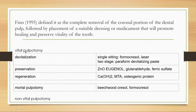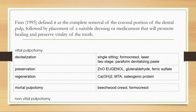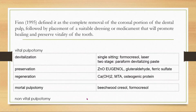We basically have two types of pulpitomy: vital and non-vital. In vital pulpitomy, we have the vitalization type, preservation type, regeneration type, and mortal pulpitomy. In vitalization, we can have single-sitting and two-stage: single-sitting can use formocresol or laser; two-stage can use paraformaldehyde-containing paste. Preservation uses zinc oxide eugenol, preserving biological tissue properties. Regeneration uses calcium hydroxide with capability of regenerating like dentine; MTA and osteogenic protein can be used. Mortal pulpitomy can use Buckley's formocresol.